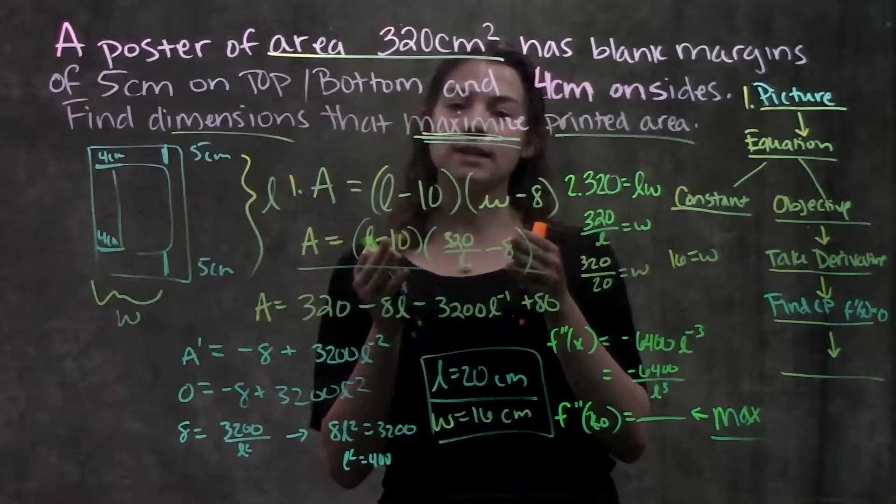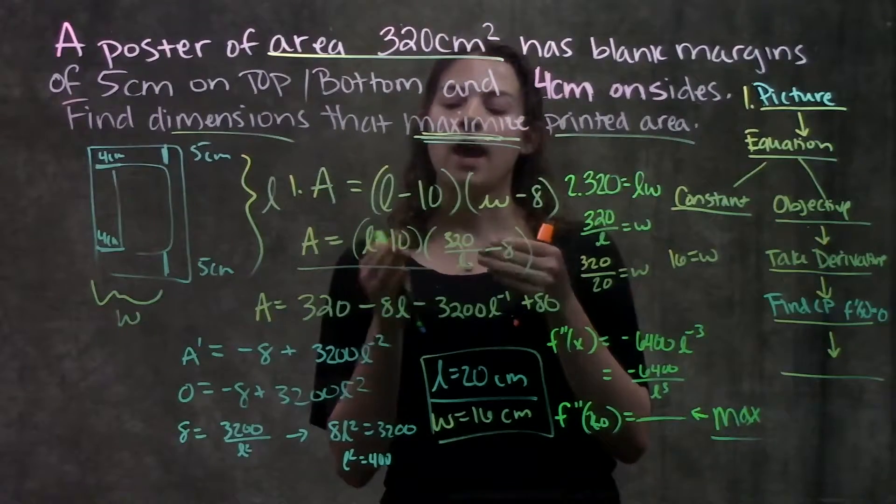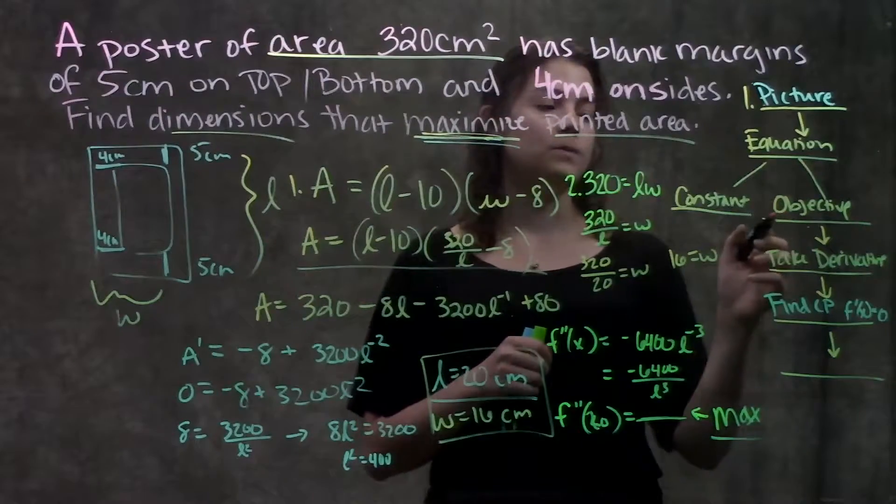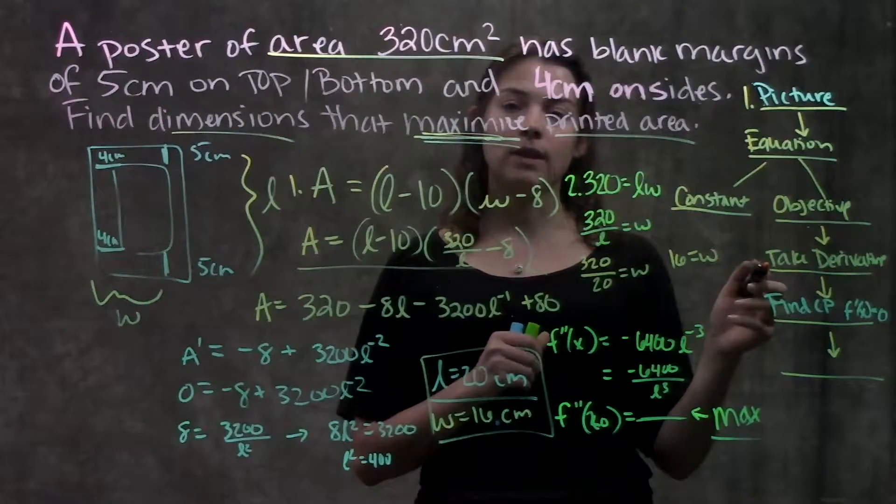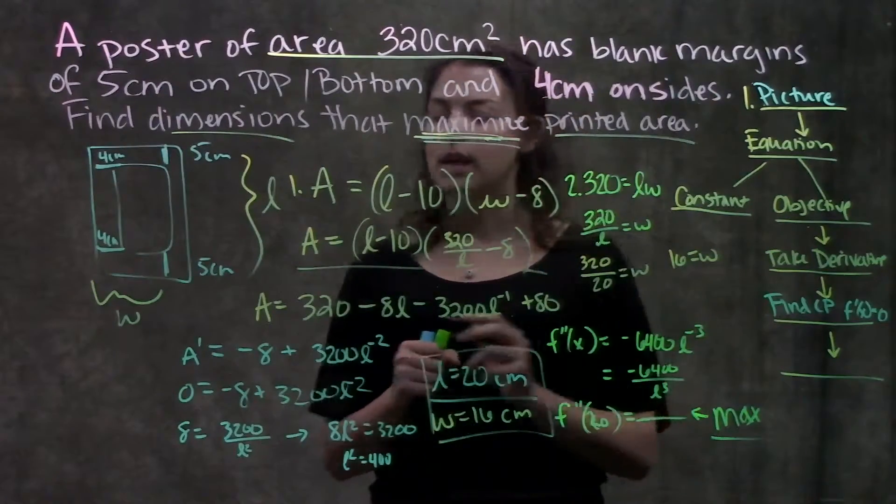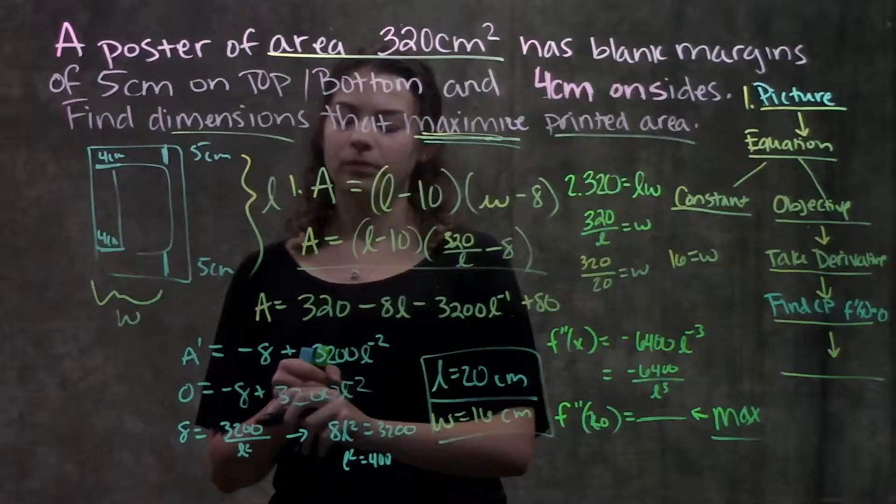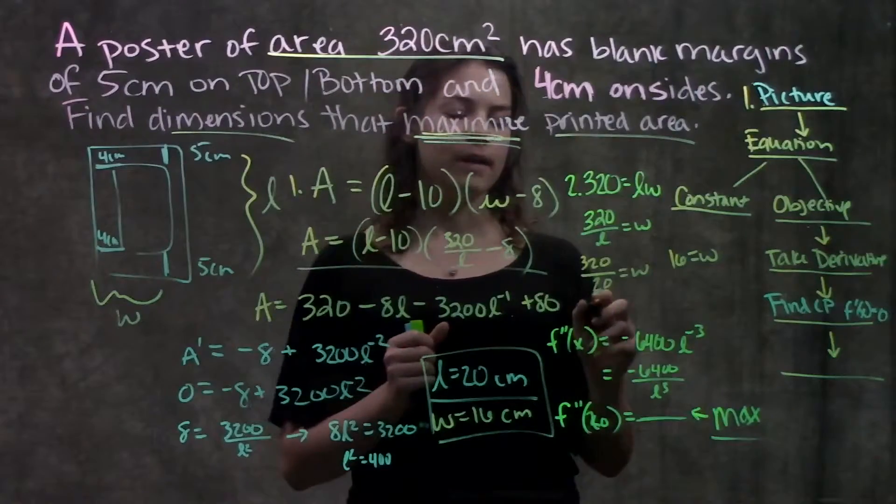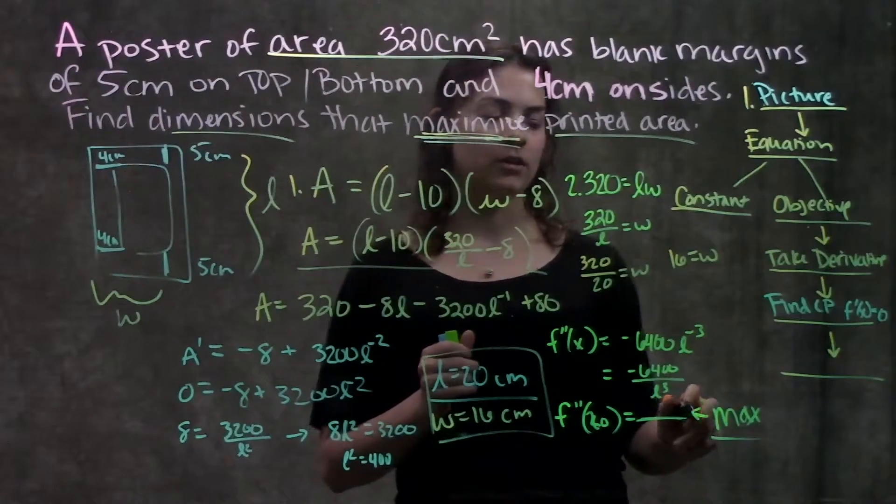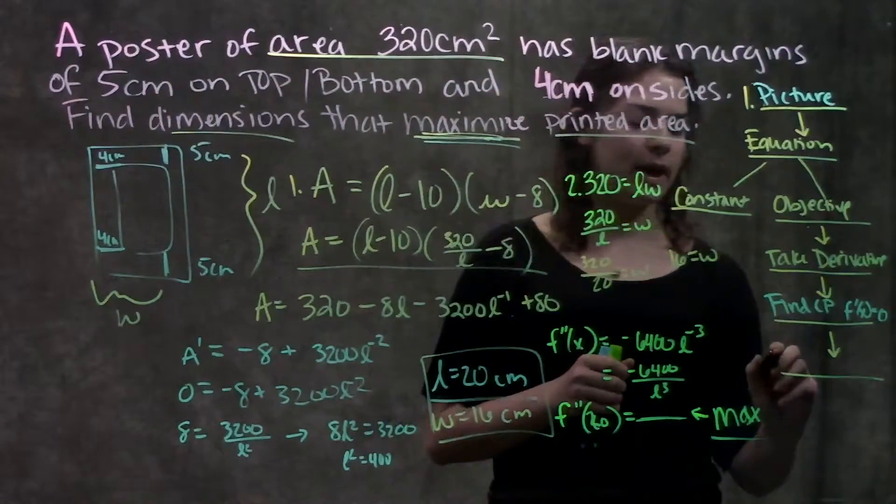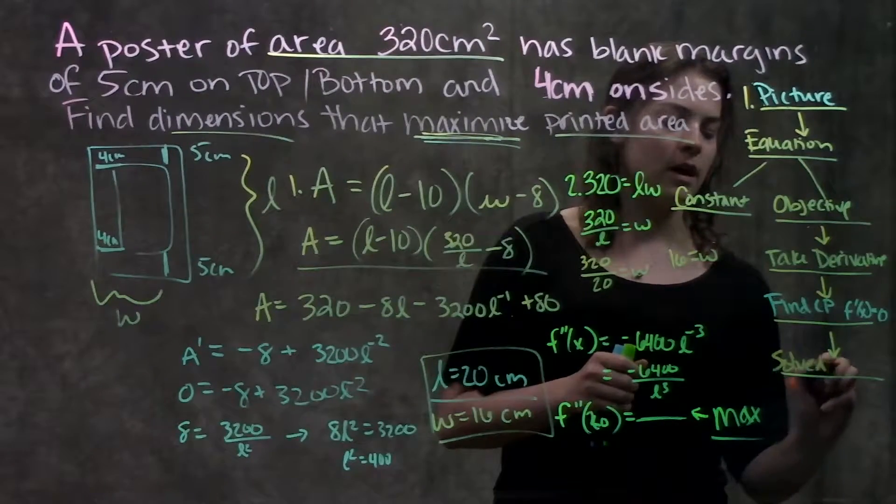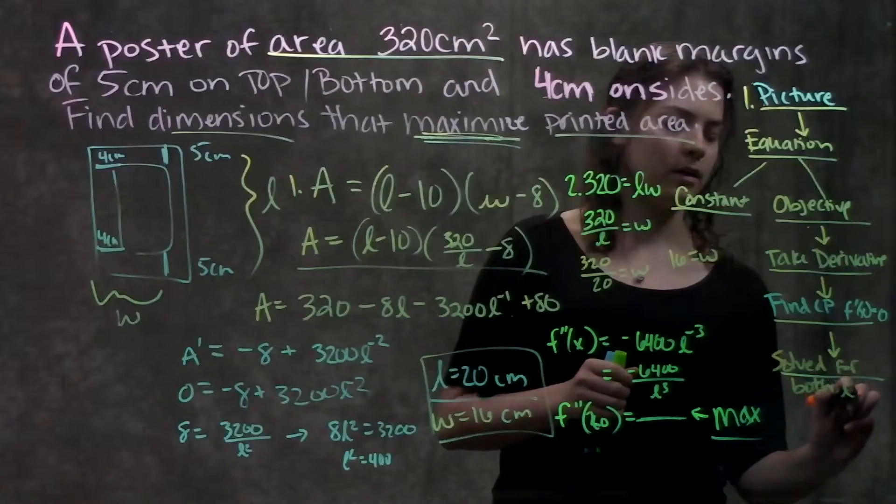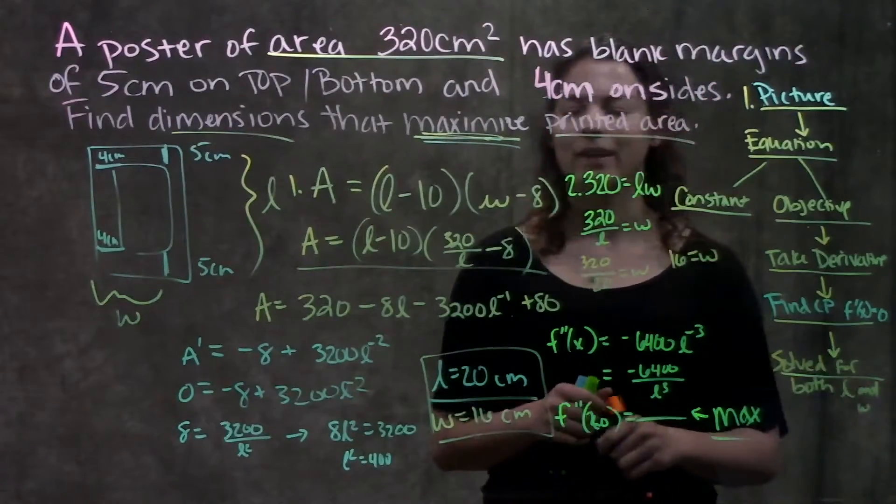Once we had that, we were able to take the derivative and find the critical points by setting it equal to zero. We solved for L when we set it equal to zero, verified that it was the maximum value, and then we just solved for our other variable. So solve for both L and W. That's the last step.